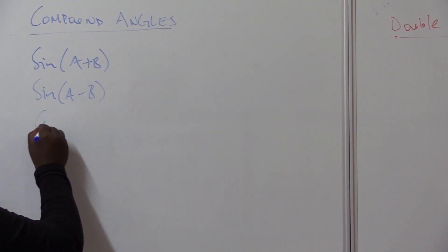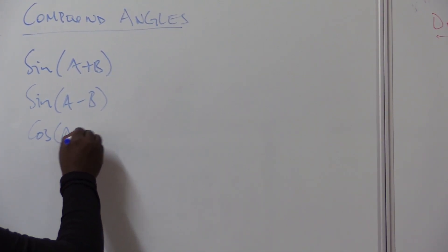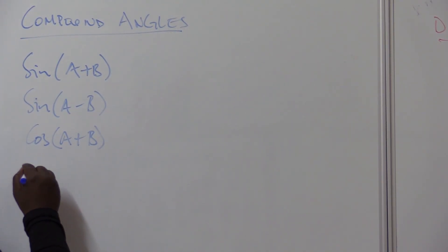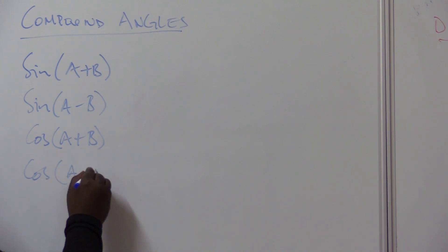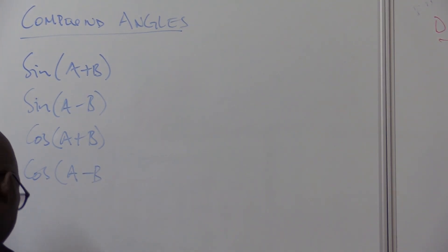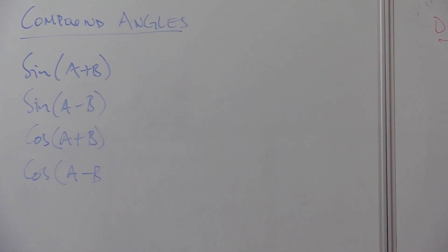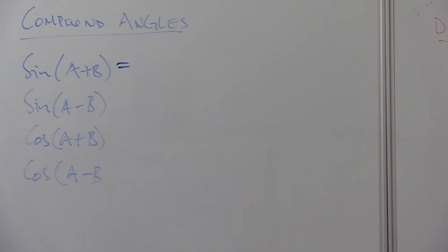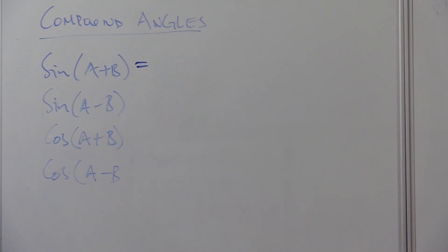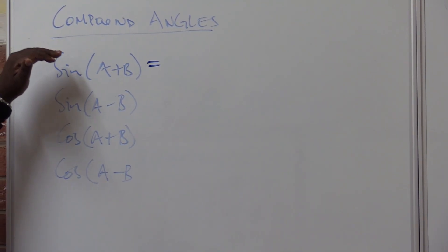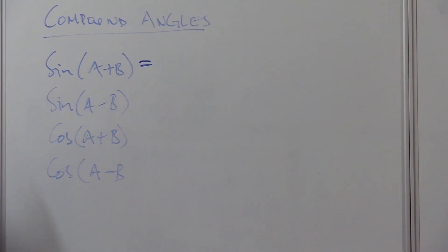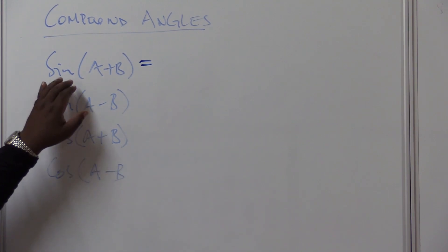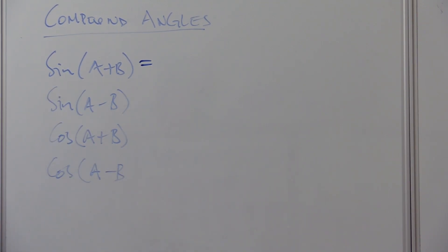If I've got cos of (A plus B), what is the answer? If I've got cos of (A minus B), what is the answer? Let's look at the first one. There is a rhythm that I want you to understand and pick up. When we talk of sine in compound angles, the rhythm is sine cos, cos sine. I repeat, the rhythm for compound angle of sine is sine cos, cos sine.